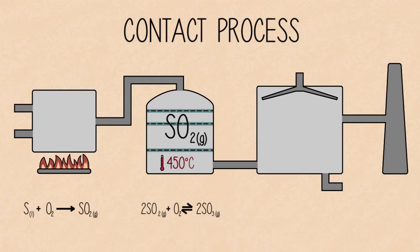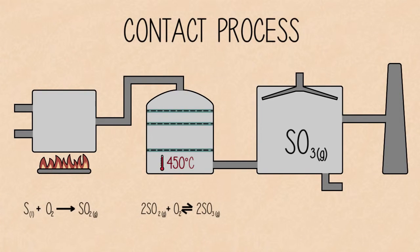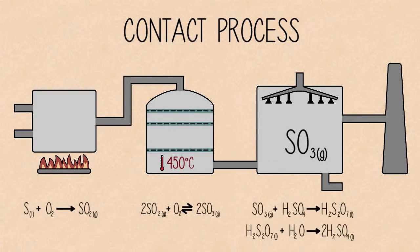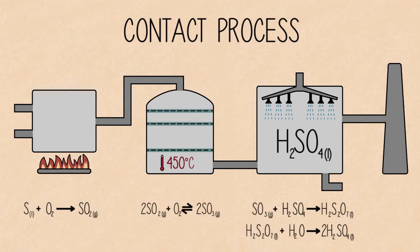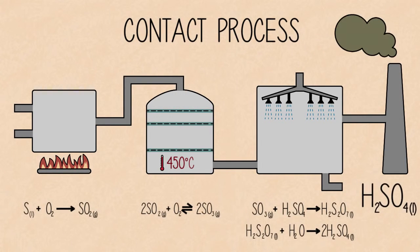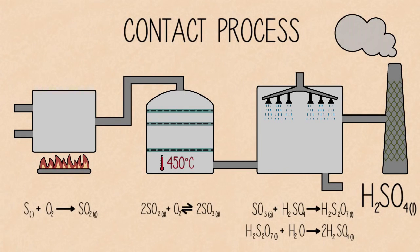This produces sulphur trioxide. The sulphur trioxide is treated with a fine mist of water and 99.5% sulphuric acid is collected. The acidic fumes produced are treated with acidic scrubbers to prevent local acid rain.